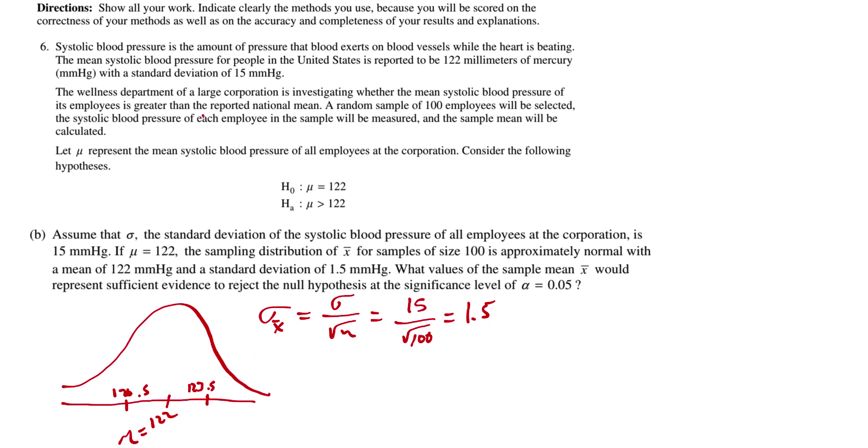They're asking about what value down here for x-bar will give us a tail on the right. It's a one-sided tail so that alpha equals 0.05. We need to find, we're going to use our calculator to find this value here.